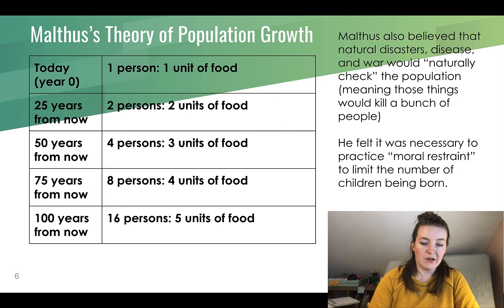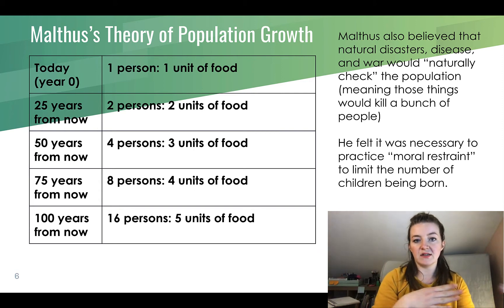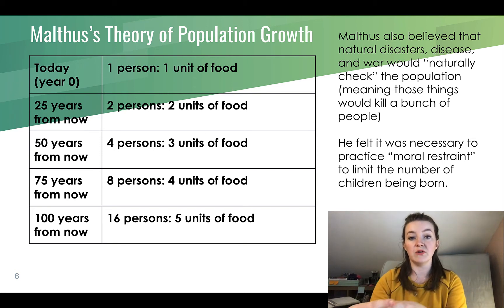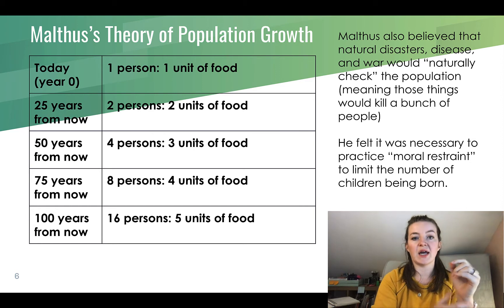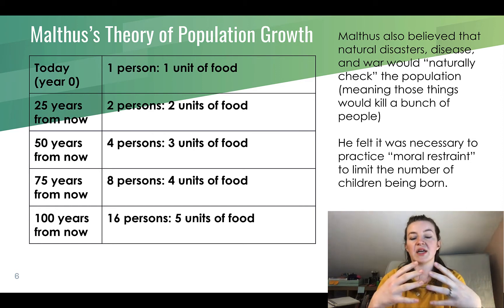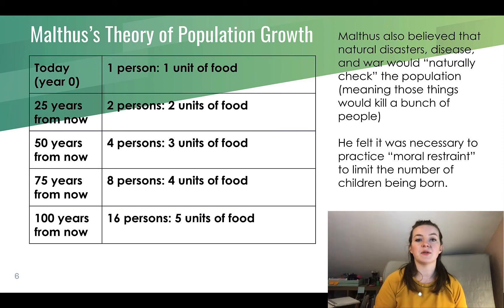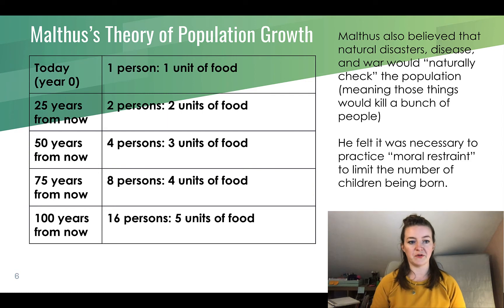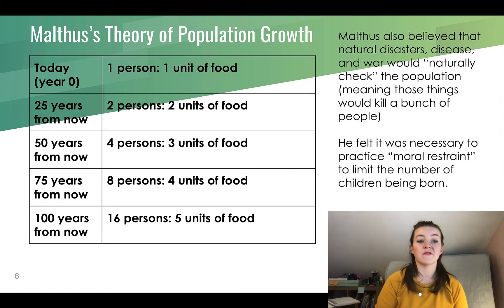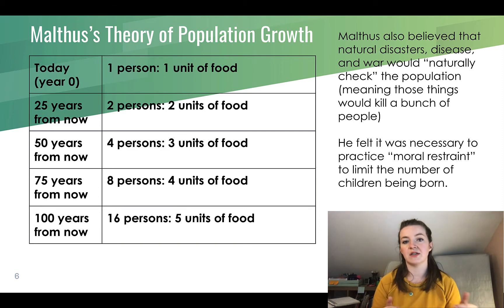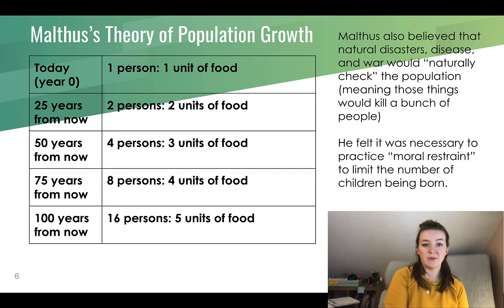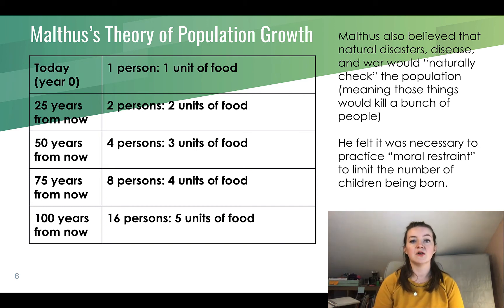Looking at it in a chart: at year zero you have one person and one unit of food. Food grows arithmetically — adding one unit every 25 years — while population grows exponentially, doubling every 25 years. So: year 0, one person, one unit of food; year 25, two people, two units; year 50, four people, three units; year 75, eight people, four units; year 100, sixteen people, five units. We would drastically outpace food production.